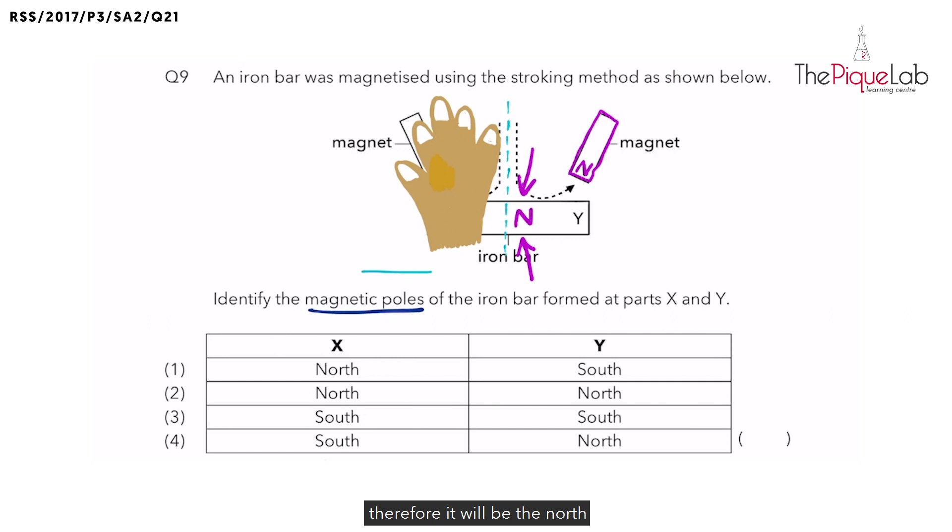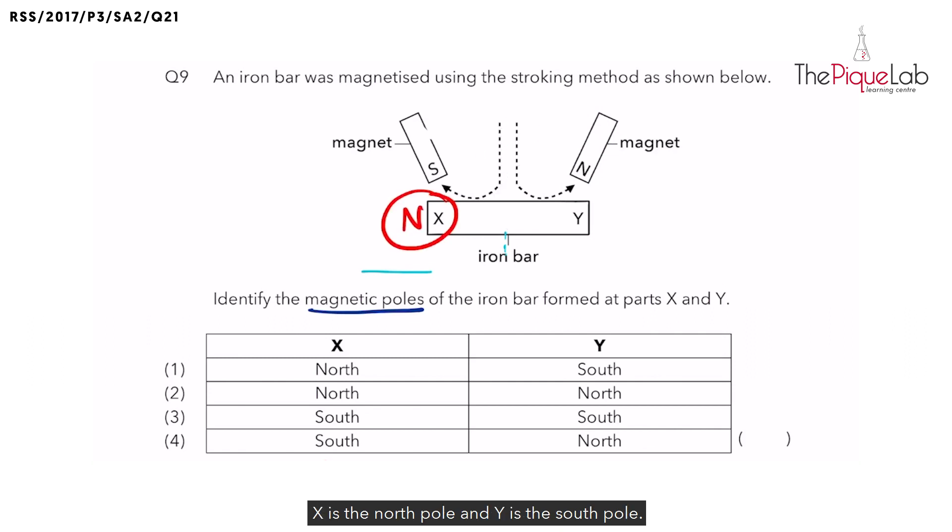Therefore, it will be the North. And the other end would be the South. So Y is the South Pole. And therefore, we've gotten our answer. X is the North Pole and Y is the South Pole.